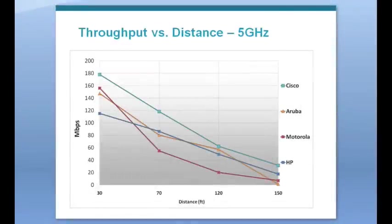Now, let's examine the 5 gigahertz results. In this test case, every vendor delivers over 110 megabits per second at 30 feet, with Cisco leading the pack with over 170 megabits per second at this particular location. As distance is increased, Motorola's performance quickly falls down, whereas Cisco consistently provides best-in-class throughput all the way out to 150 feet.